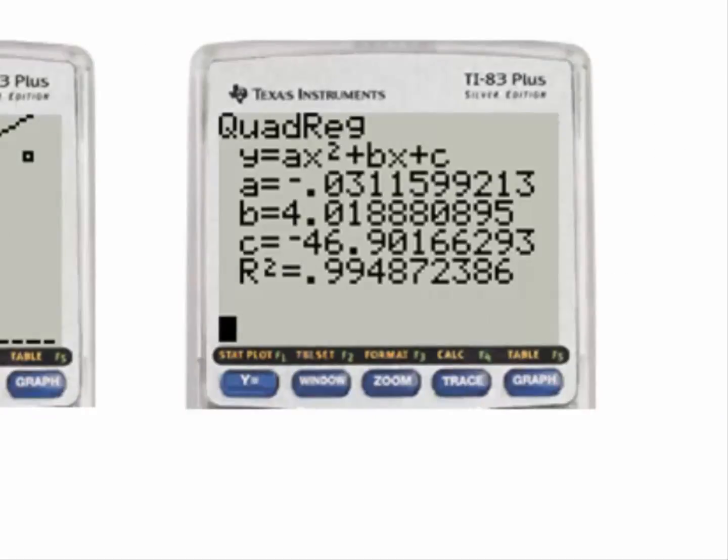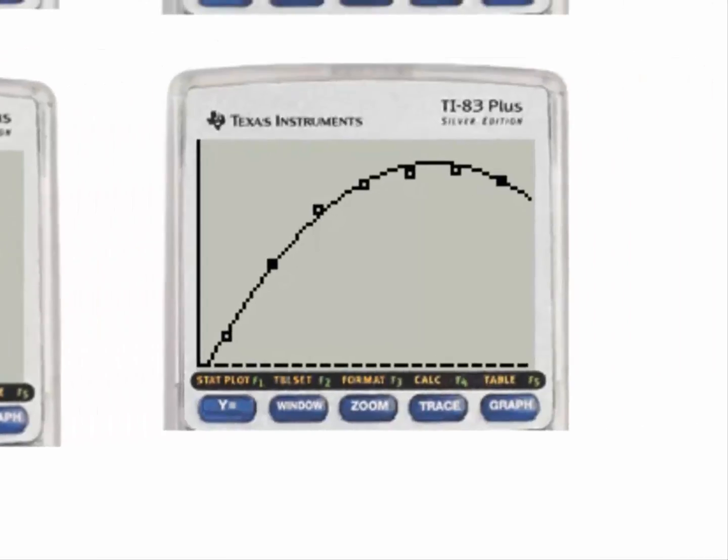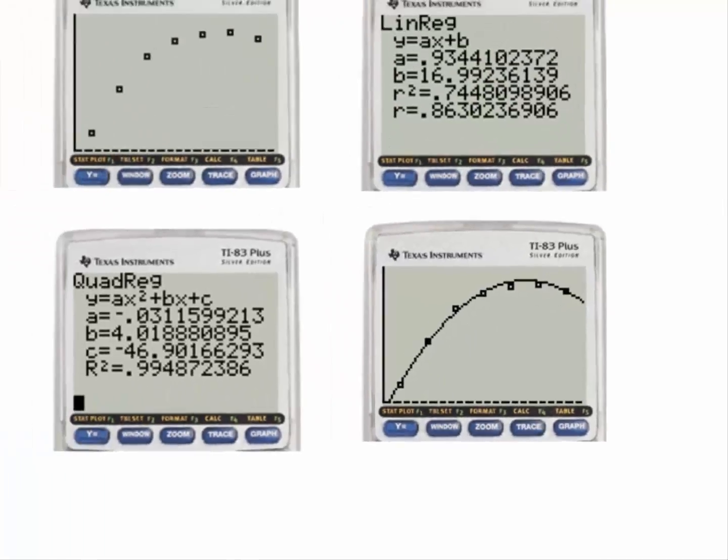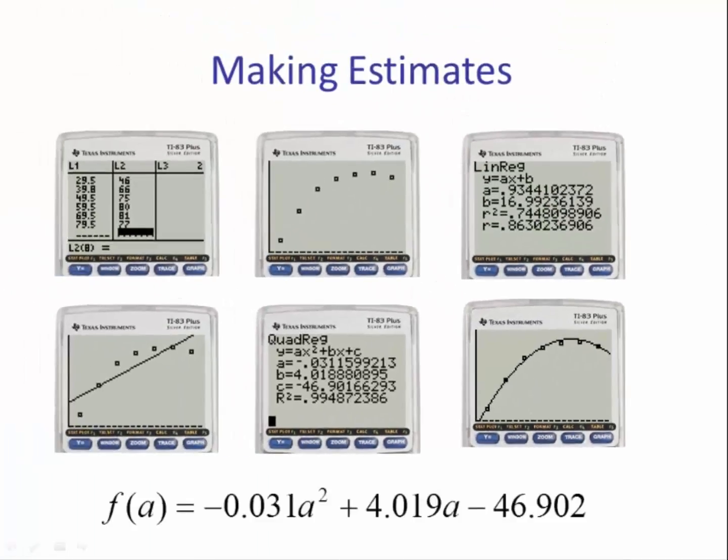Finding the quadratic regression, we have r squared being 0.99. And if we graph this model with the data, we see that the quadratic is fitting the data set pattern very well. So our model is f of a equals negative 0.031 a squared plus 4.019 a minus 46.902.